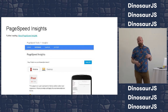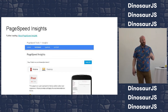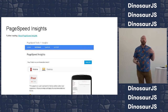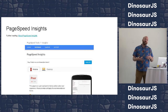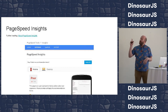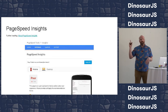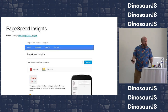PageSpeed Insights is one — it's a super simple website where you plug in a URL, click Analyze, and Google will request your website a couple of times, run some heuristics, and tell you how you did and what you can improve. As you can see in the screenshot, the React TodoMVC doesn't do so hot — 60 out of 100. This metric is what I believe Google uses as the signal into their rankings algorithm.